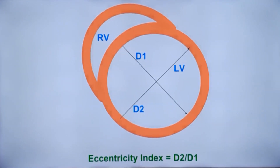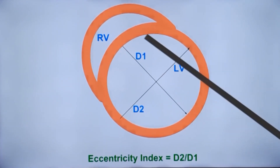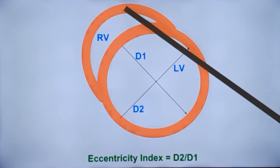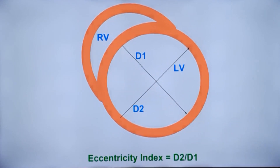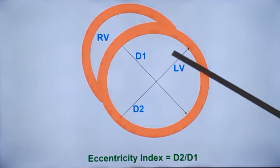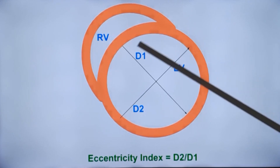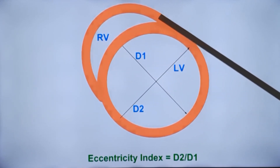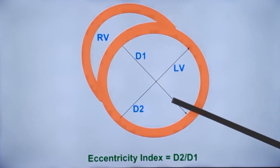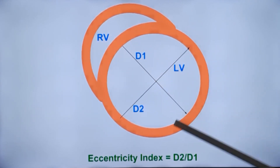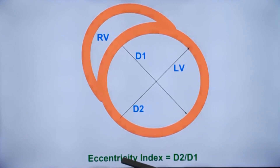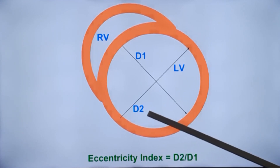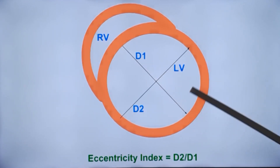This is the diagrammatic representation of the left ventricle and the right ventricle in short axis view. One measurement, D2, is taken parallel to the interventricular septum, and D1 is taken perpendicular to the interventricular septum. The eccentricity index is the ratio D2 divided by D1.